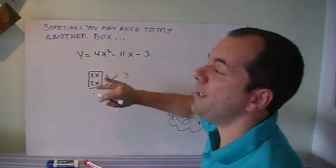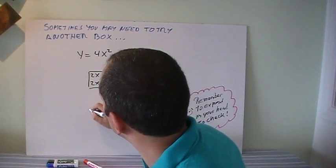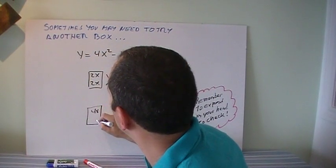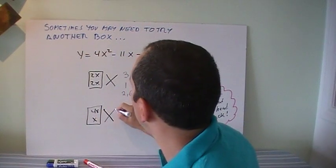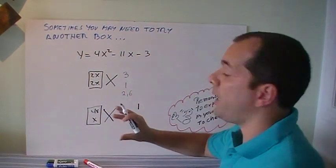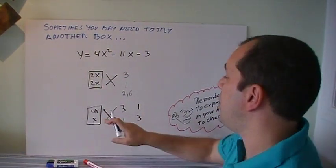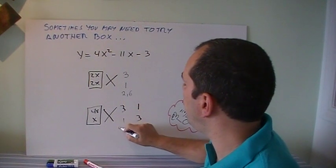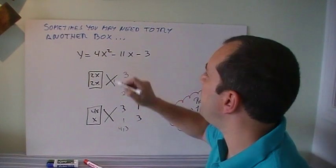So either I erase it, or I do another box. With 4x and x, cross multiply, 3 and 1, and now I need to do the 1 and 3. So let's check. 4 and 1 is 4, and 1 and 3 is 3. So with 4 and 3, can I make 11? No, I can't, so that's not good.